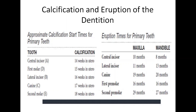Then for the eruption of primary teeth: the central incisor erupts at approximately 10 months, the lateral incisor at 11 months, the canine at 19 months, the first premolar at 16 months, and the second premolar at 29 months.